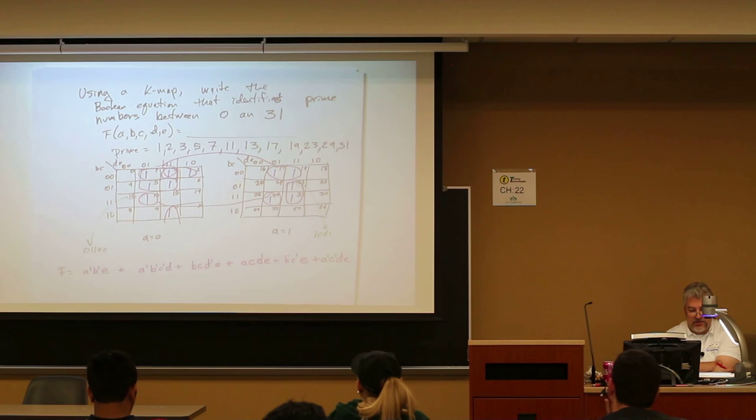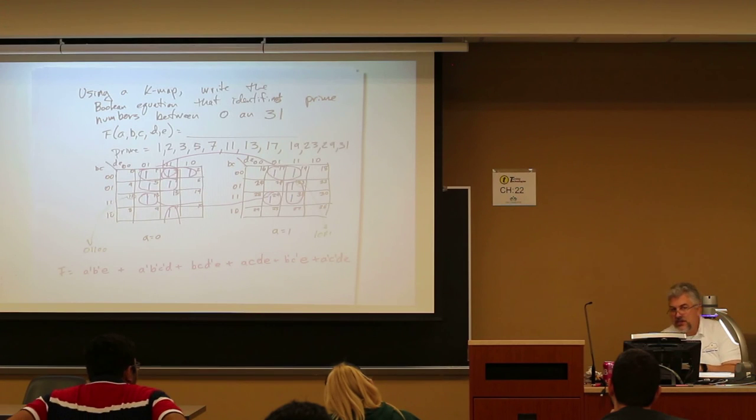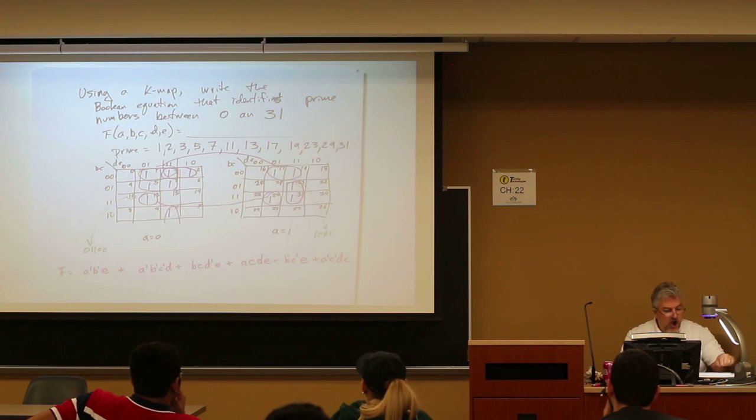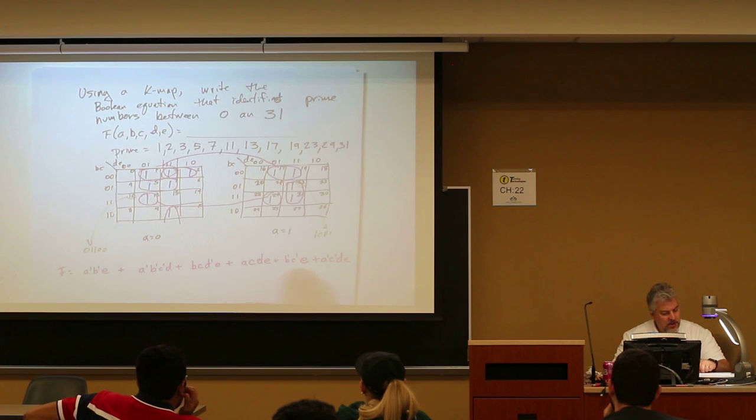Do you think we could make that any simpler? That's going to be tough to make it any simpler. Wow. I do want to make one observation in this. By the way, what's the only even number, prime number? Two. So what do you notice about all of these right here? It's odd because, with the exception of two, it's all odd because, you always have E right there. E, E, E, E. E is always 1. That means it's an odd number.